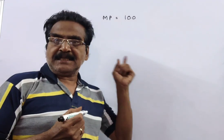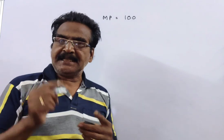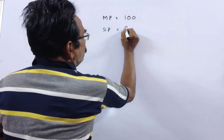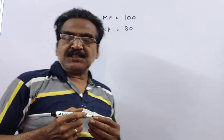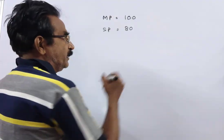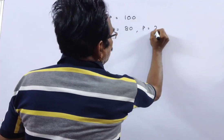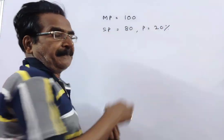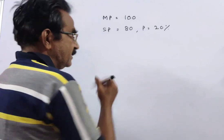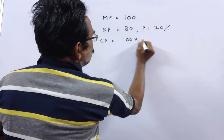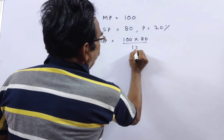Say the marked price of each article is 100 rupees. If it is sold at a discount of 20%, then the selling price is equal to 80 rupees. If it is sold at a discount of 20%, he gets a profit of 20%. So profit is equal to 20%. With selling price 80 and profit 20%, the cost price is calculated as: cost price = 100 × selling price divided by (100 + profit).